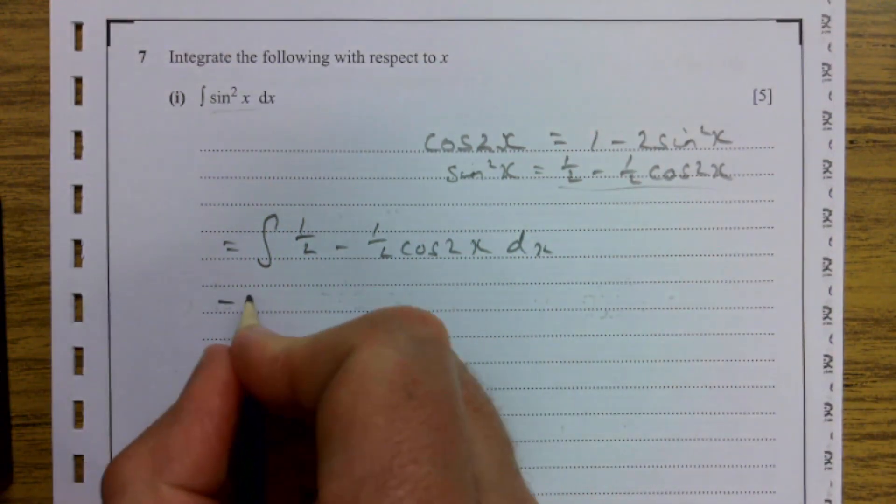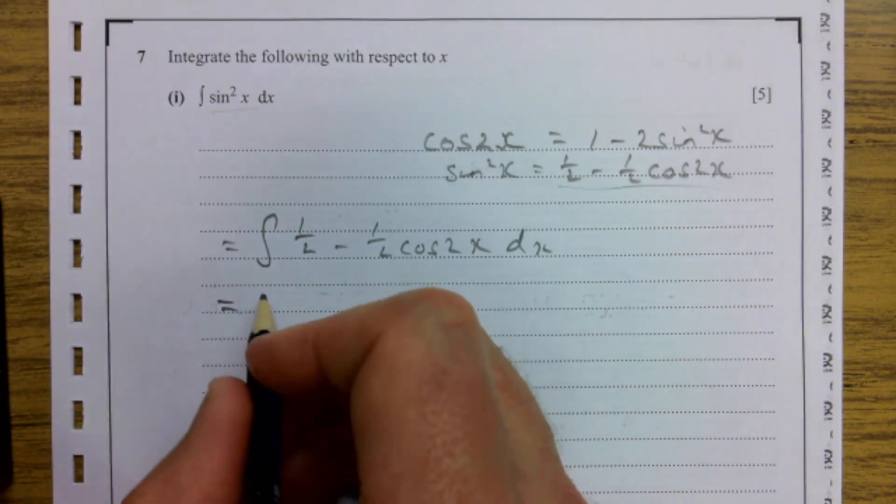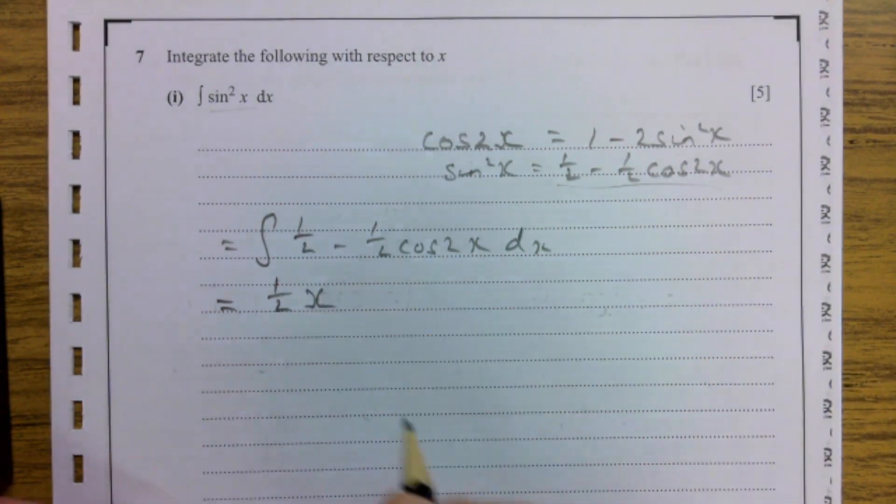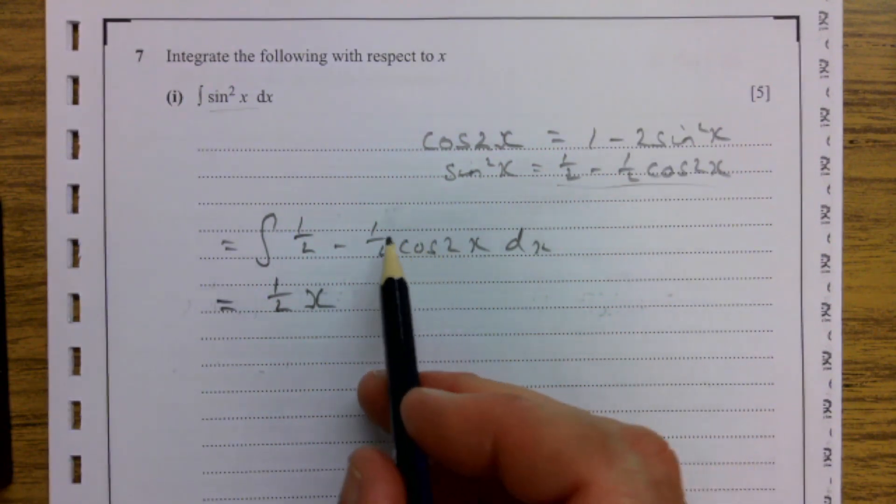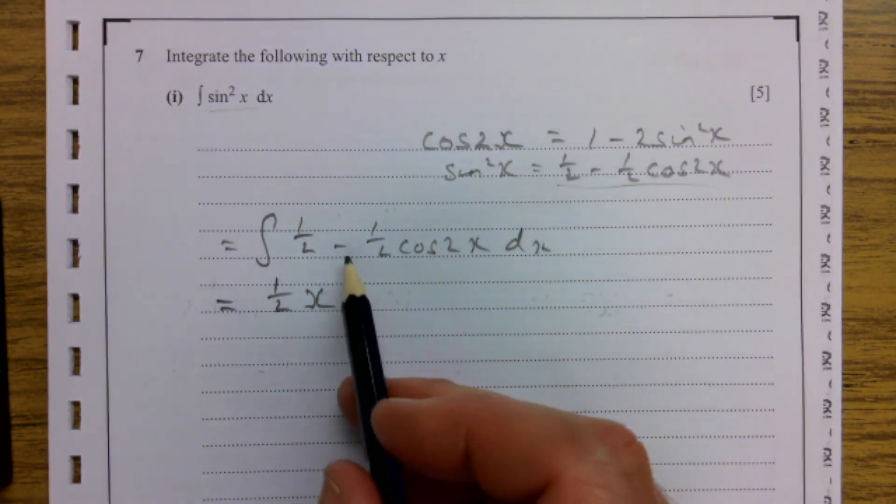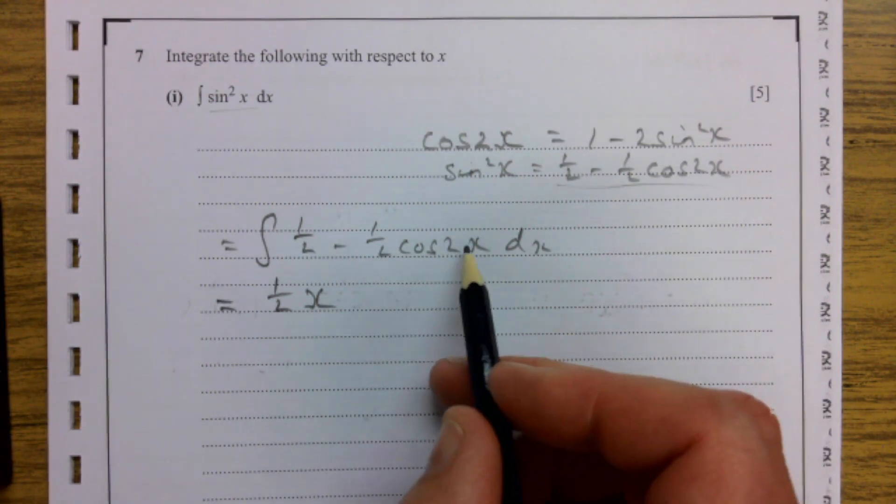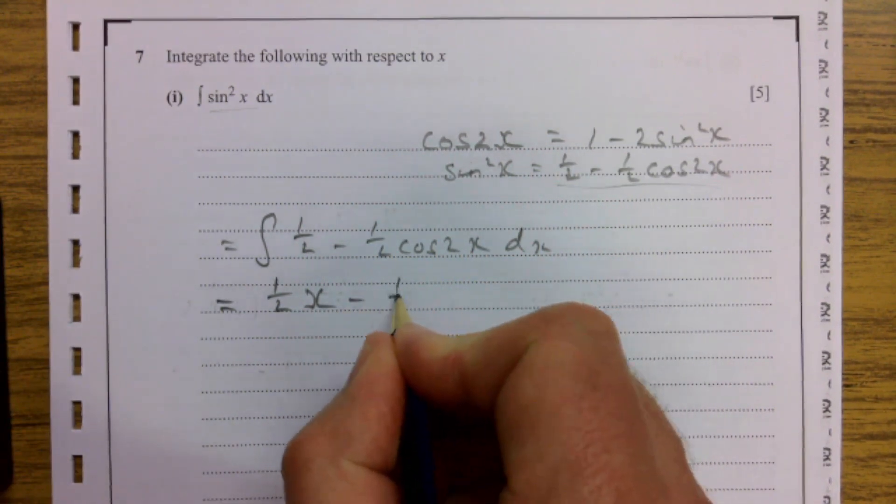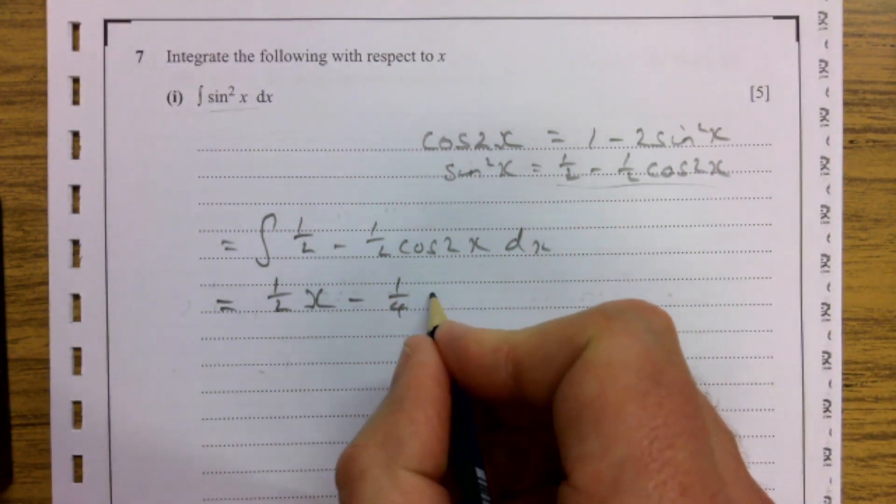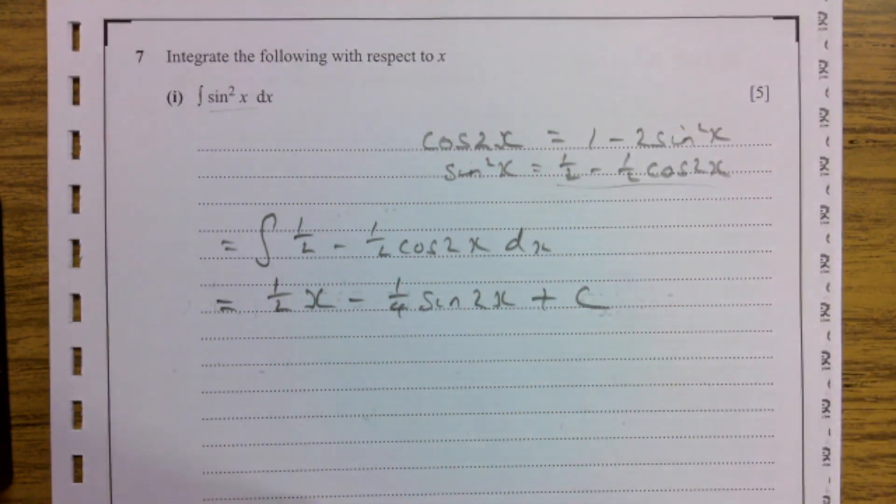So I can rewrite my question as the integral of a half minus a half cos 2x dx. Integrating now, a half becomes a half x. Then this is a bit messier. It's cos and it's minus cos, so it's going to go to minus sine. The fact that that's a 2 means we're going to divide, so it's minus a quarter sine 2x plus c.